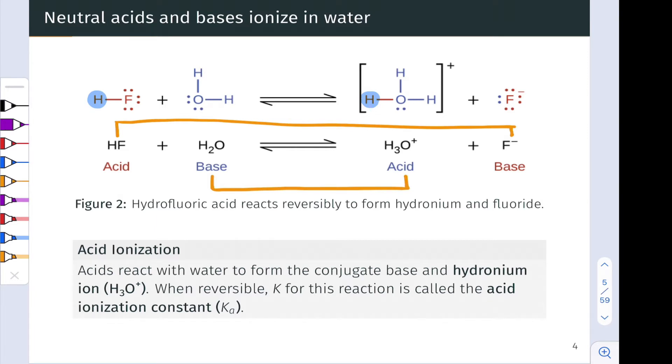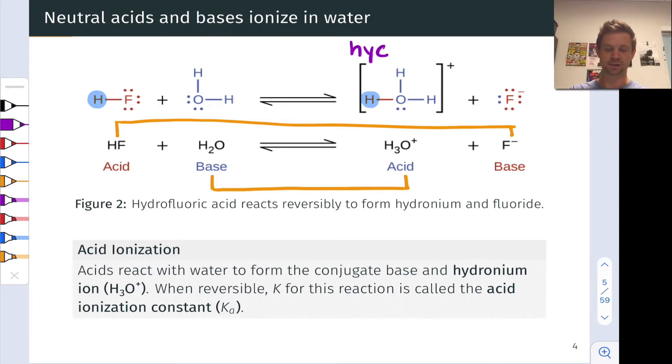One other thing to notice here about the conjugate acid of water, H3O+, this is a very important ion known as the hydronium ion. And it's important in all aqueous solutions, but especially in aqueous solutions of acids where it's in relatively high concentration. We'll see this ion again when we talk about the self-ionization of water, returning to this idea that water can react with itself in a Bronsted-Lowry acid-base reaction.